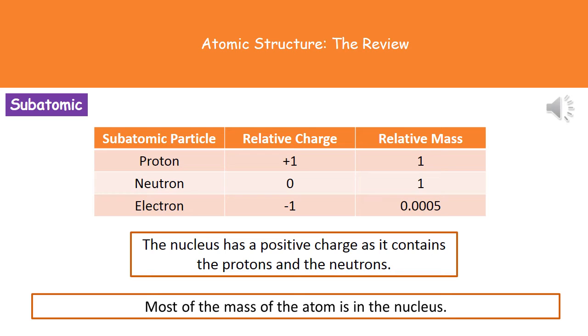And it also is where we have the mass, because if we look at the two values there for our proton and neutron, they both have a relative mass of one compared to the electron's 0.0005. So the majority of the mass of our atom is in the nucleus, which has a positive charge on it.